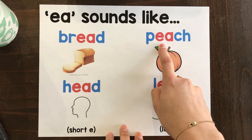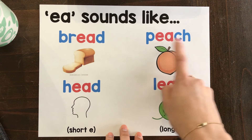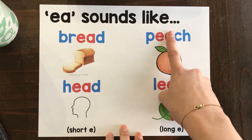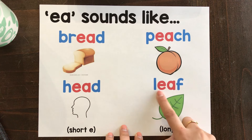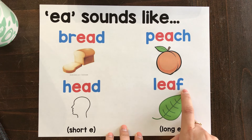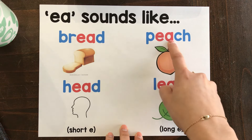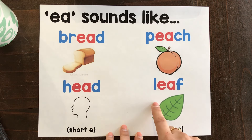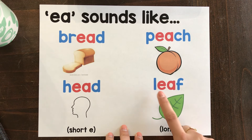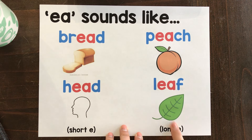P-E-CH: peach. The A acts like it's not even there. Same with leaf — L-E-A-F: leaf. Peach and leaf both have EA that sounds like long E.